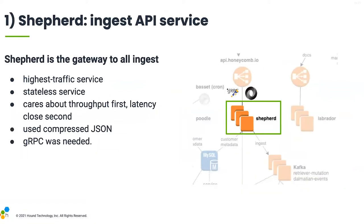These are all things we found via our SLOs, debugged using observability, and relied on our error budgets to experiment and recover from. For Graviton2, we first decided to try things out in Shepard — our API service — because it's the highest traffic and relatively straightforward. It's stateless, it scales on CPU, it's optimized for throughput first then latency. We care a lot about getting data out of your RAM onto our disks very fast. We used to use a compressed JSON payload transmitted over HTTPS. However, there's a new standard called OpenTelemetry — a vendor-neutral mechanism for collecting data out of services, including tracing data and metrics — which supports gRPC-based protocols over HTTP/2.